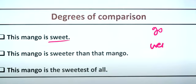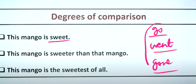Just like verbs have forms — go, went, gone — which are the first form, second form, and third form — adjectives also have degrees of comparison.